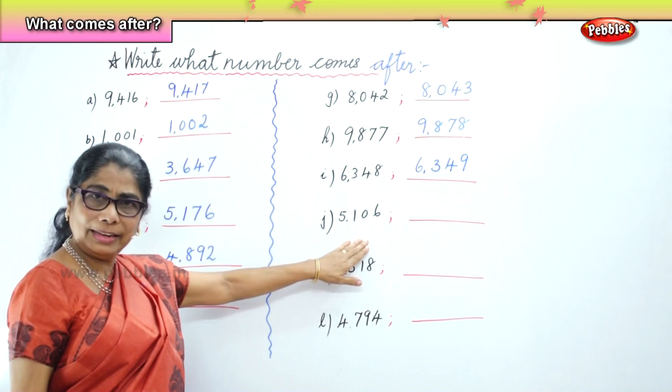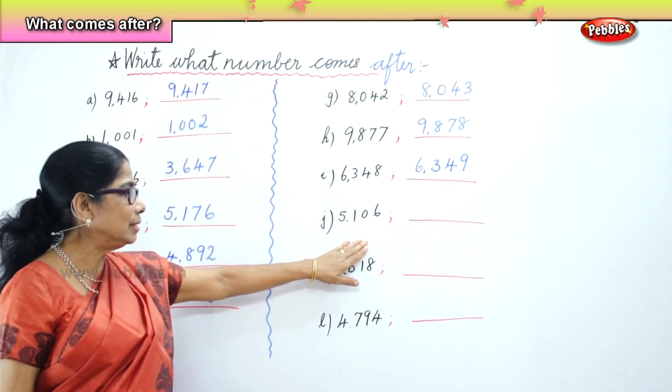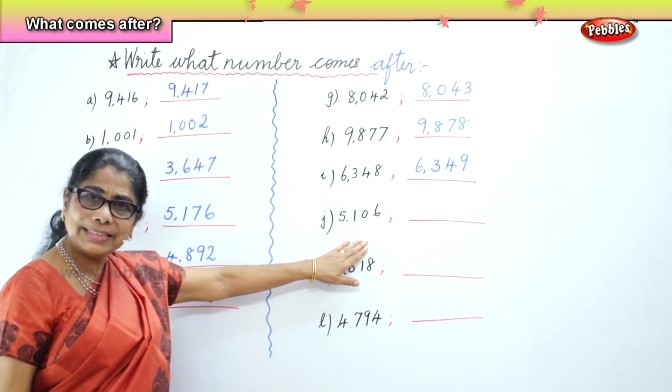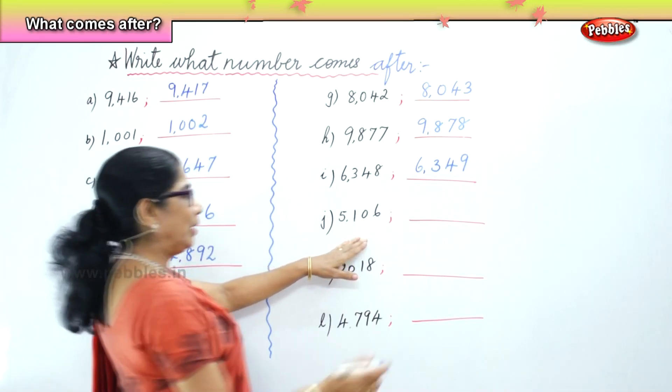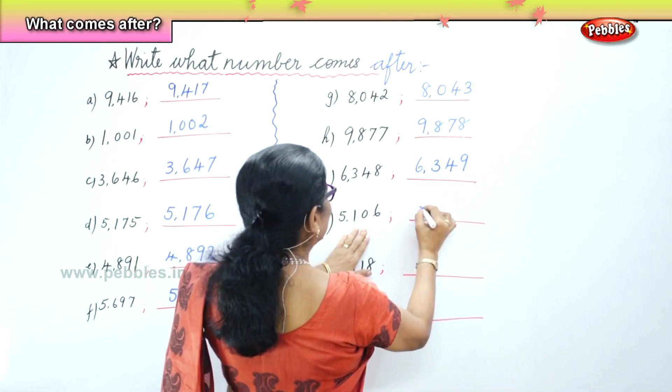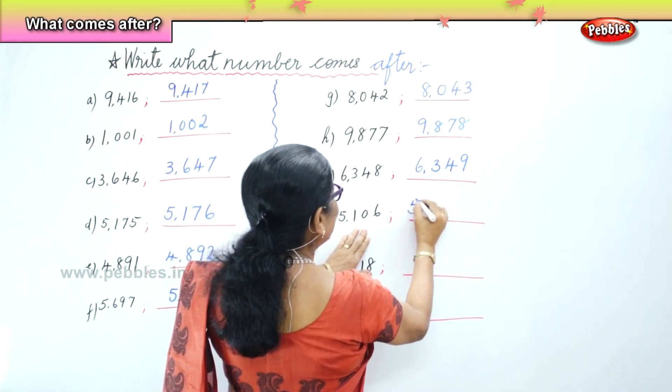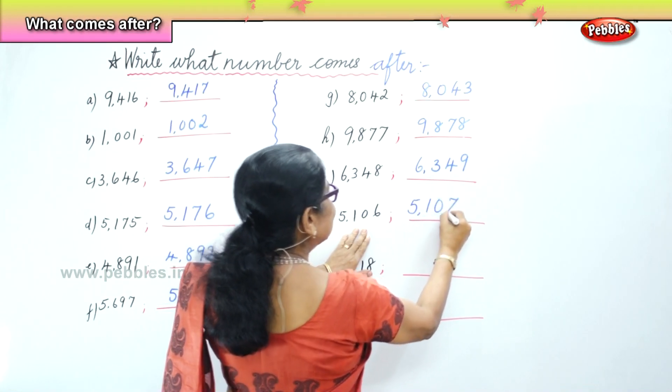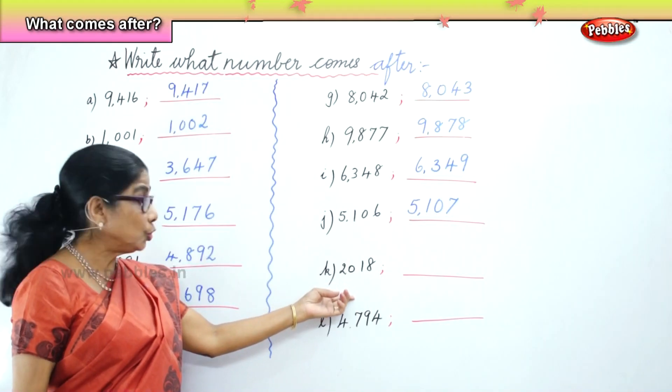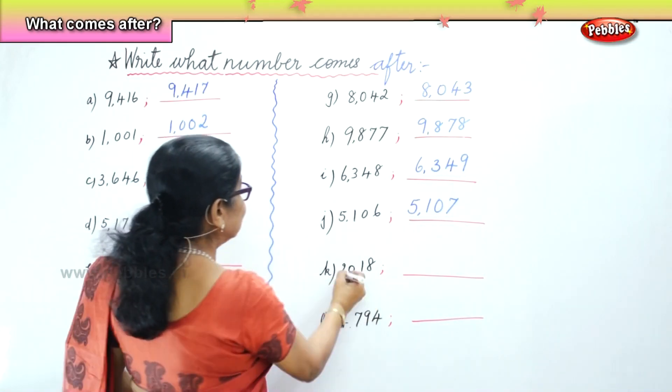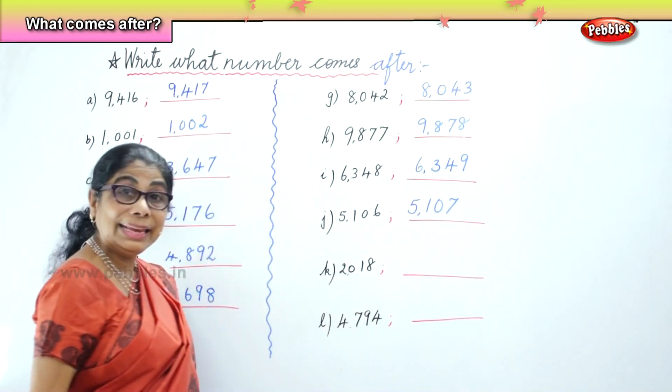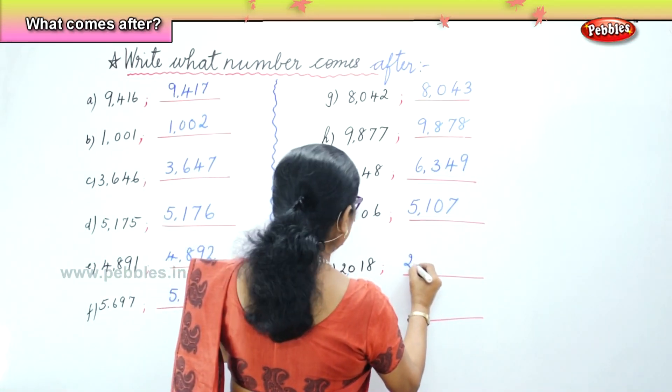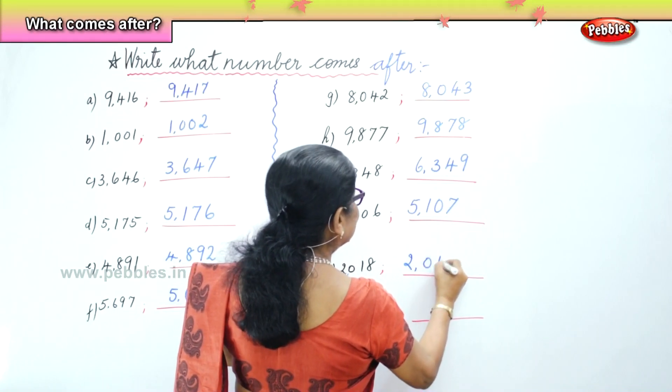Next number we have here is 5,106. What number comes after? 5,106, 107. Very good. So the number that comes after 5,106 is 5,107. Next. 2,018. What number comes after that? 2,019. So 2,019.